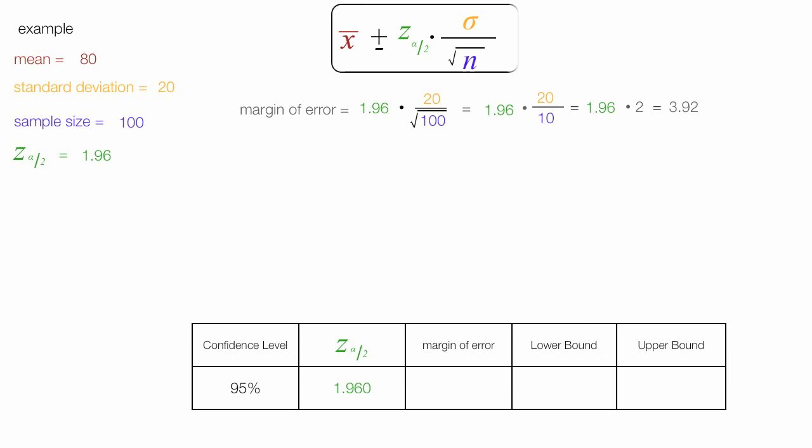So now I want to calculate the confidence interval. So the confidence interval is equal to the mean, which is 80, plus or minus the margin of error. So it's 80 plus or minus 3.92.